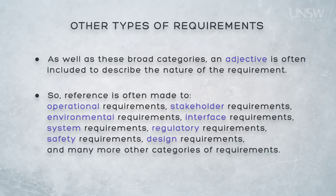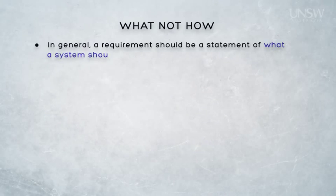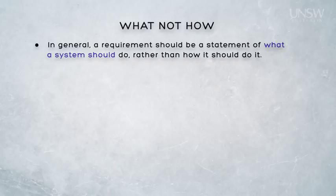Largely, though, these are simply ways in which we might group them so we can make some sensible use of them. In general, it's true, particularly at the system level, that a requirement should be a statement of what, not how. That is, you should say what the system should do, rather than how it should do it, and avoid forcing any particular design on a low-level designer.